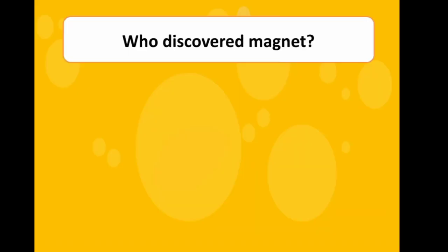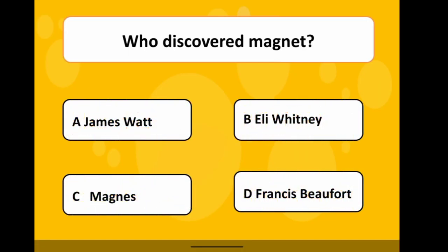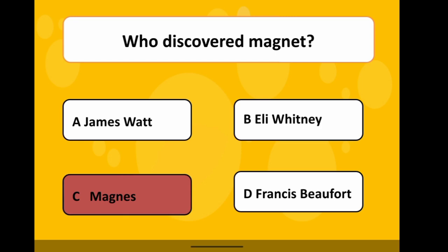Question Number 3: Who discovered the Magnet? Options are A. James Watt, B. Elmer Wainey, C. Magnus, D. Francis Ford. The correct answer is Option C, Magnus.